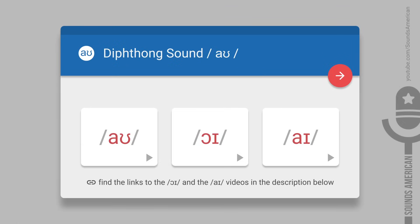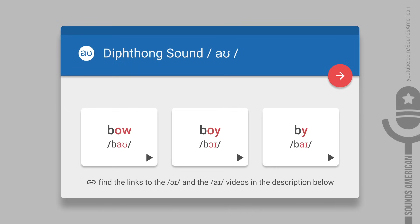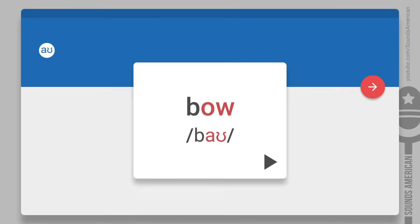There are three diphthongs in American English: the OW, the OY, and the I, as in the words bow, boy, and buy. We'll cover the OY and the I in our other videos. As for the OW, let's find out how to pronounce this sound.